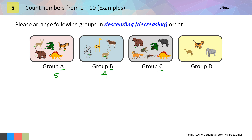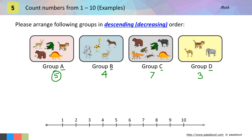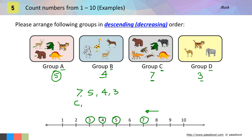Group C has one, two, three, four, five, six, and seven — seven animals. And group D has one, two, three animals. Let us mark these numbers on the number scale: five, four, seven, and three. For descending order we start from right and move towards left. So numbers in decreasing order will be seven, five, four, and three — meaning group C, then group A, then group B, and group D.